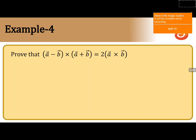We are going to prove that (a⃗ - b⃗) × (a⃗ + b⃗) equals 2(a⃗ × b⃗), that is 2 times of a cross b. In order to prove this, we will take the LHS, that is the left hand side, which is (a⃗ - b⃗) × (a⃗ + b⃗).